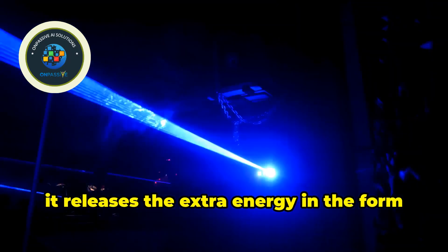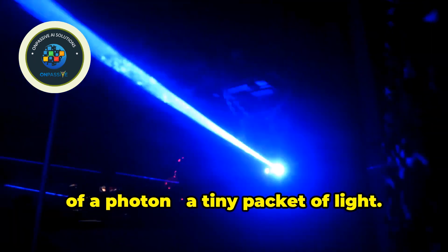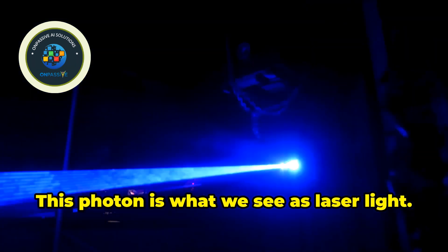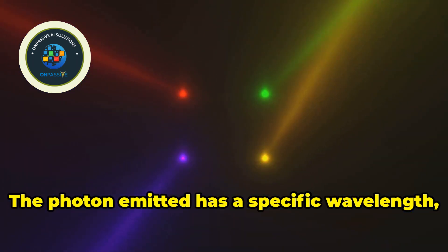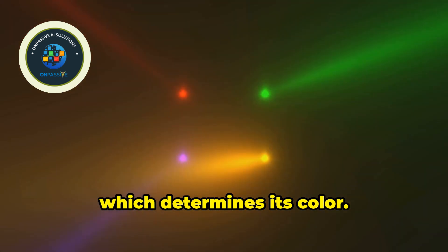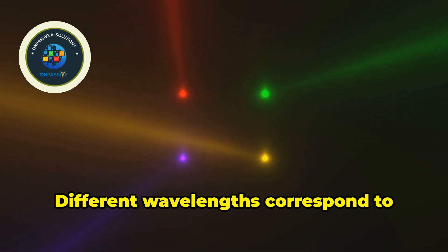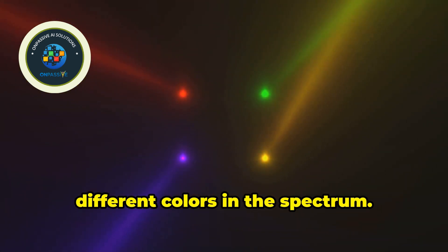When it does, it releases the extra energy in the form of a photon, a tiny packet of light. This photon is what we see as laser light. The photon emitted has a specific wavelength, which determines its color. Different wavelengths correspond to different colors in the spectrum.